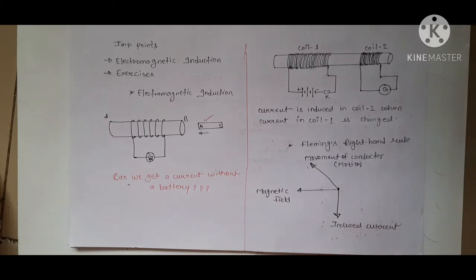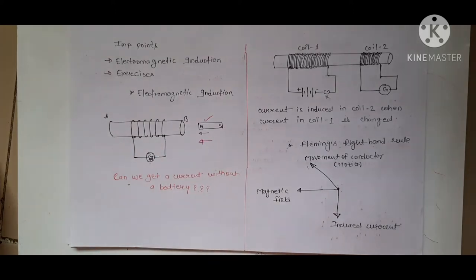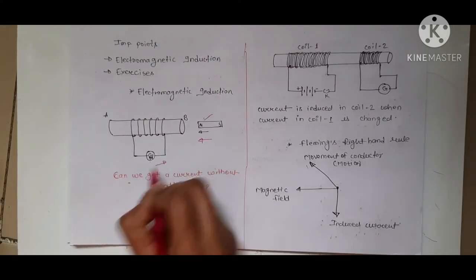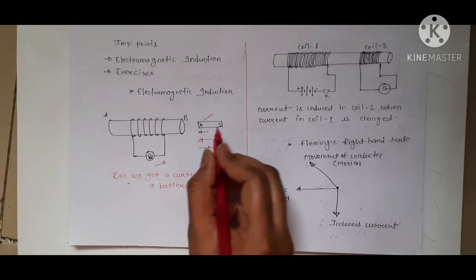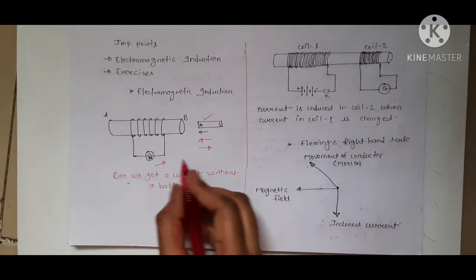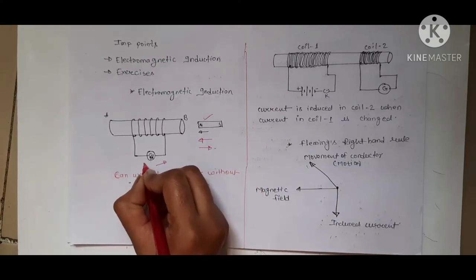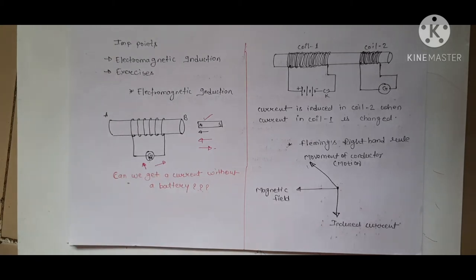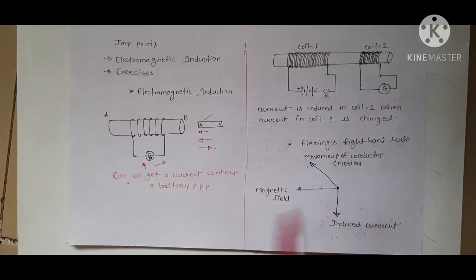If the direction of the magnet's motion is towards the coil, then galvanometer deflects to the right side. But if the direction of the magnet's motion is away from the coil, then galvanometer deflects to the left side. So this means that the direction of motion determines the current direction. If you change the direction of motion, the current will flow in the reverse direction.